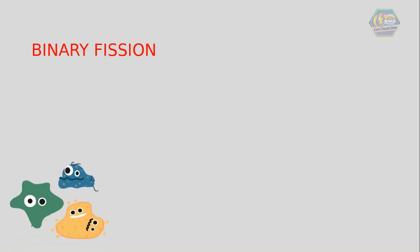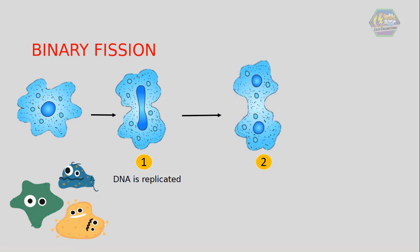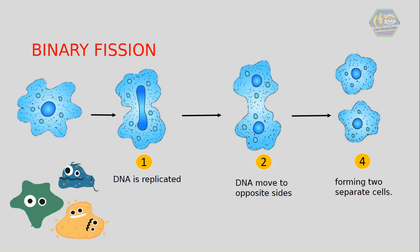Lastly, binary fission. Simple organisms such as bacteria undergo a type of cell division called binary fission. First, the DNA is replicated and the cell grows to twice its size. Then the duplicate strands of DNA move to opposite sides of the cell, similar to metaphase. Next, the cell pinches off in the middle, forming two separate cells. The outcome is another living organism, unlike mitosis where cells are constantly dividing for growth or body repair.